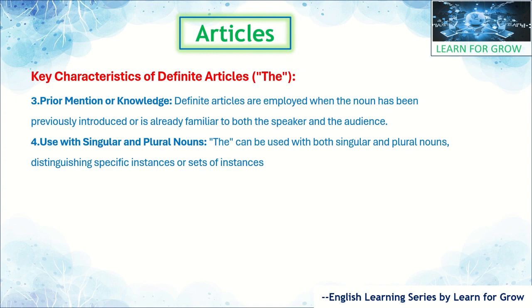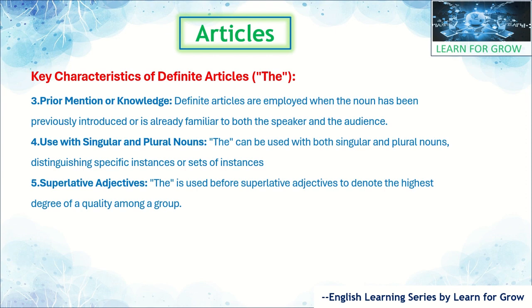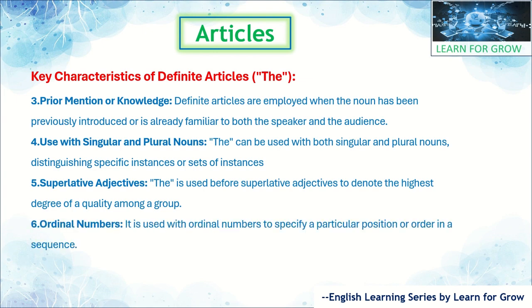The fourth characteristic is use with singular and plural nouns — 'the' can be used with both singular and plural nouns. The fifth is superlative adjectives — 'the' is used before superlative adjectives to denote the highest degree of a quality. If you haven't learned that section, I have already made a video on this. The sixth is ordinal numbers — 'the' is used with ordinal numbers to specify a particular position or order in a sequence.